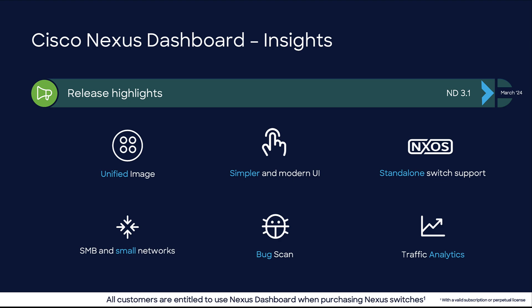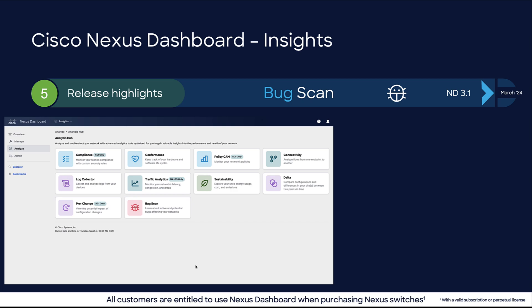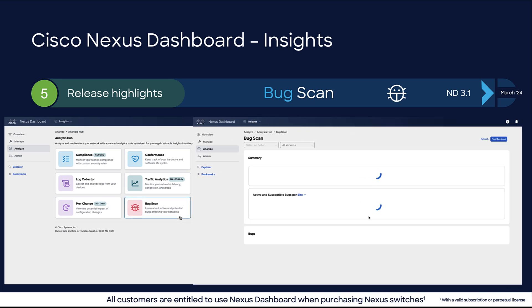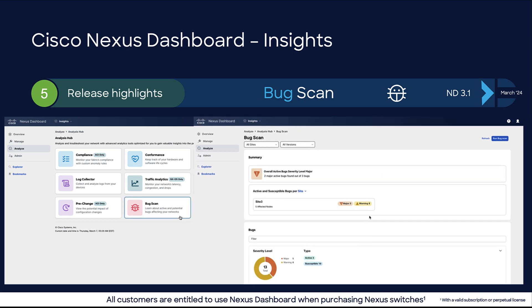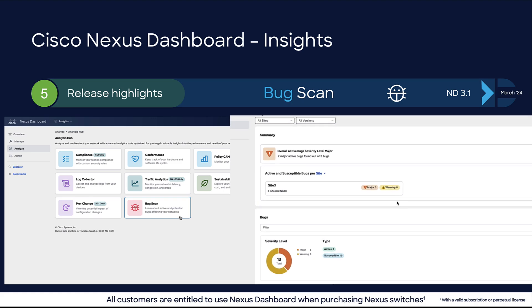And last, BugScan. BugScan now incorporates a new UI with the ability to run on-demand. You can now visualize not only active bugs, which may be actively impacting your networks, but also susceptible bugs, which may exist per version or fabric.